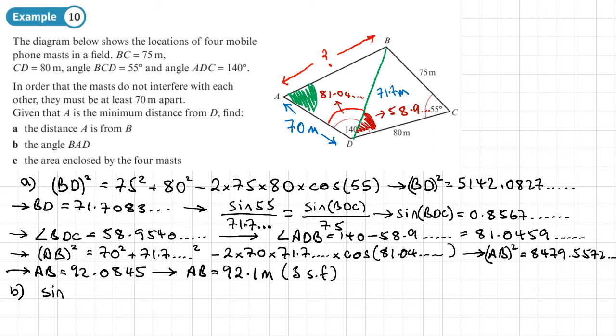So I will have sine of this angle here, and that is 81.0459, over the side that goes with it. Now the side we've got before we rounded it as 92.0845, so it's useful to write it down to four decimal places. That means it's going to be accurate to at least three decimal places. This equals the sine of the angle we want to find, and that is angle BAD, the bad angle, divided by the side that goes with it. That's the 71.7, now that's to four decimal places, so 71.7083.